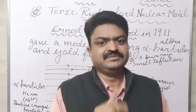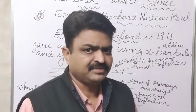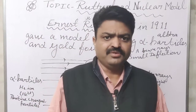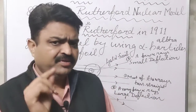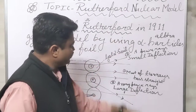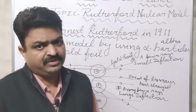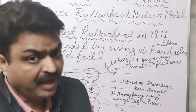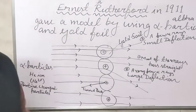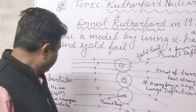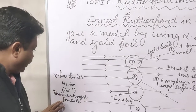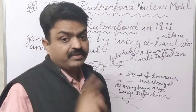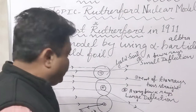After the Thomson model, there was another model given by a great scientist — Ernest Rutherford. Ernest Rutherford did a different experiment. In his experiment, he used alpha particles and a gold foil. Alpha particles are the helium ions and they have positive charge.